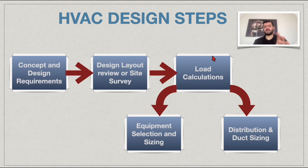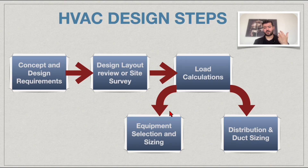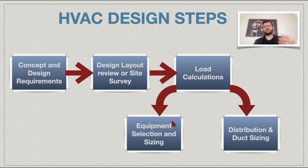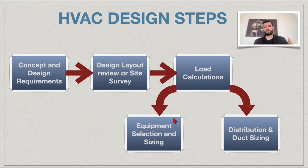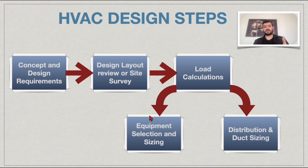Once you successfully conduct the load calculations, you do two things: you select the equipment based on the types of HVAC systems covered in previous lectures, and you pick the size — the amount of cooling or heating the equipment needs to provide. Given global warming and real-life market practice, the preference is to focus on cooling, so equipment is sized based on cooling load calculations to remove the required amount of heat.